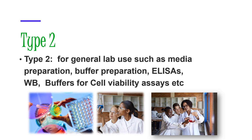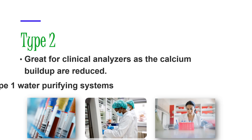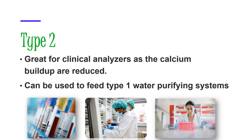The next type is referred to as Type 2 water, or Elix water. This is for general lab use — making media, making buffers, diluting for ELISAs, western blots, or cell viability assays. You can get away with Type 2 water. Type 2 water is also great for clinical analyzers because it reduces calcium buildup, so the water won't gunk up your instruments.